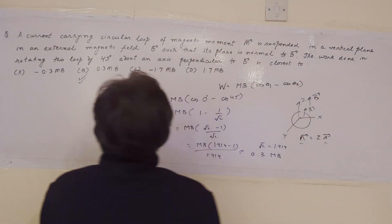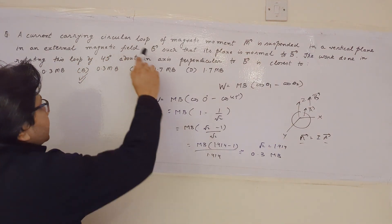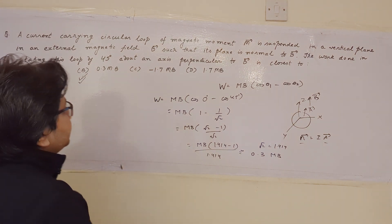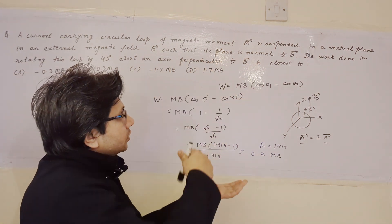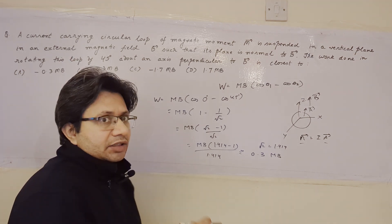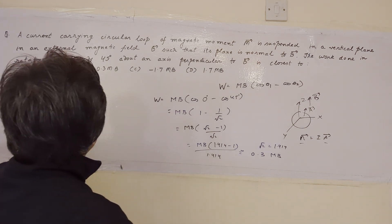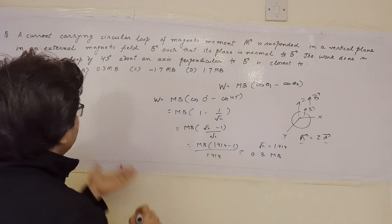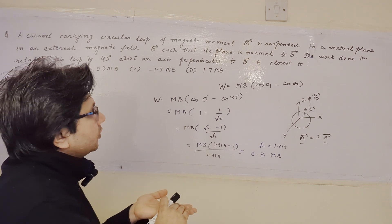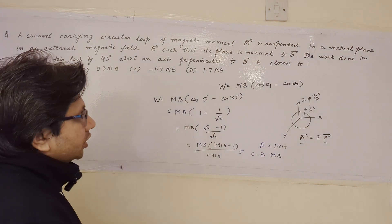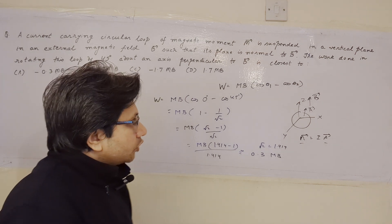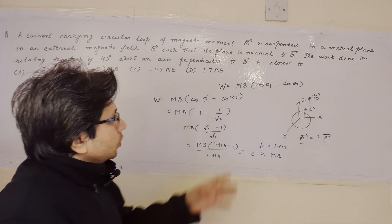To summarize: the current carrying loop with magnetic moment M is suspended in an external field B with the plane normal to B, meaning the area vector is along B. We rotate the loop by 45 degrees about an axis perpendicular to B, and using the formula W = MB(cos θ₁ − cos θ₂), we calculate the work done.